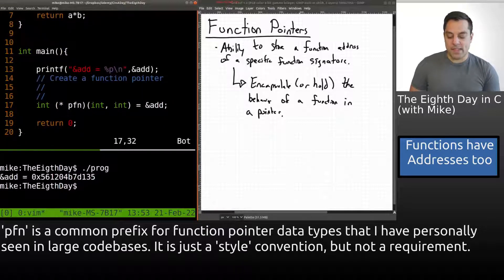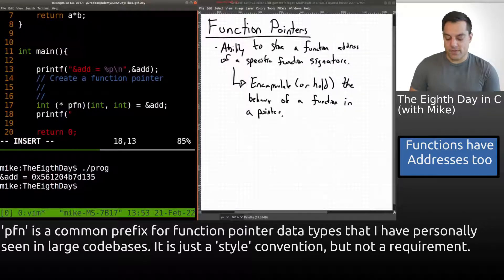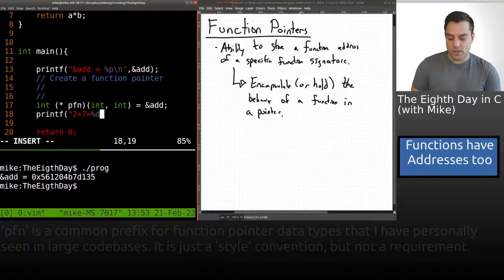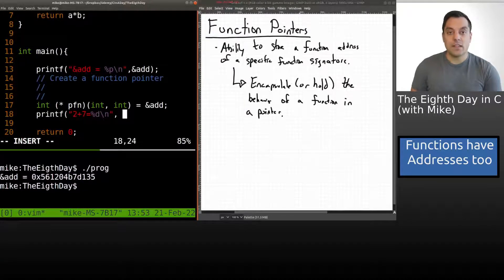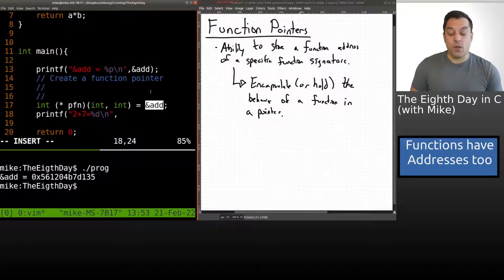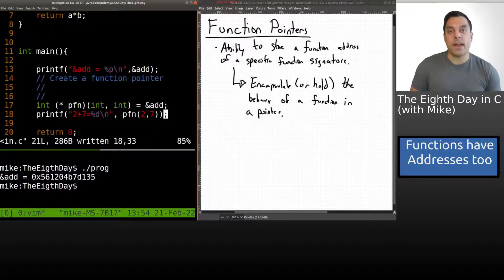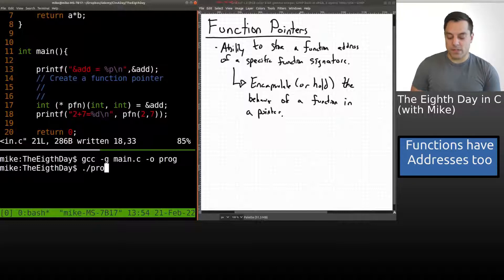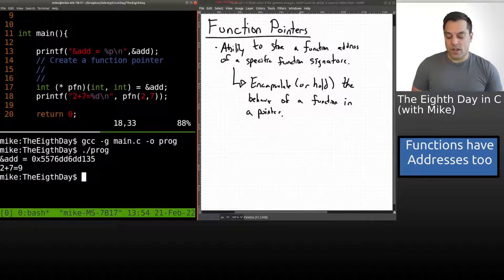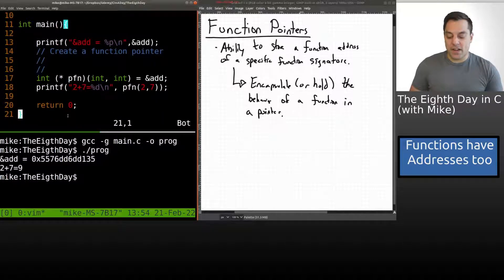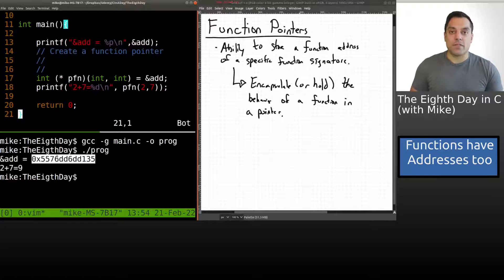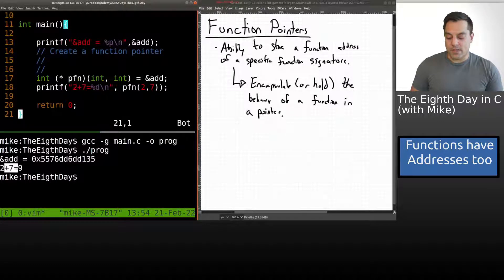Let's actually do something here. I'm going to use printf, and let's add two numbers: two plus seven equals the result of, well, which function are we going to call? We could call add explicitly, or we can access the add function through our function pointer here. I'm going to use pfn with two and seven. Let's see if this compiles and runs here. It compiles. And if I run it, it indeed runs here. Let's take a moment to stare at this. We're printing off the address of add here, and then the result of two plus seven equals, and here's our result. We're calling our function pointer because our function pointer points to add here.